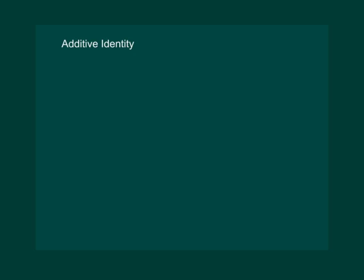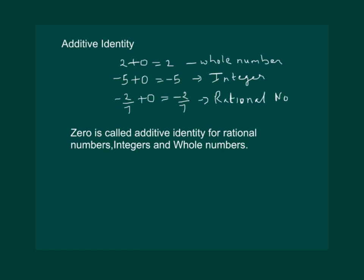Let us take up the next property of numbers. We know that 2 + 0 will give us 2. -5 + 0 will give us -5. And -2/7 + 0 will give us -2/7. In other words, 0 when added to a whole number or integer or a rational number doesn't change the number. So 0 is called additive identity for rational numbers, integers and whole numbers.